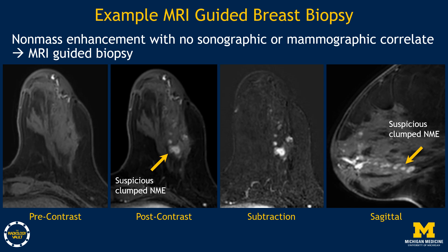We will review an example case to understand how MRI-guided breast biopsy is performed. This patient had an area of suspicious non-mass enhancement in the lower outer left breast. There was no sonographic or mammographic correlate; therefore, this patient underwent MRI-guided breast biopsy. On the post-contrast images, you can see the suspicious clumped non-mass enhancement in the slightly posterior lower outer breast, located anterior to these intrinsically T1 hyper-intense non-enhancing ducts.